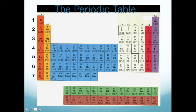In group 17 or 7A are the halogens — unlike noble gases, these non-metals are very reactive and tend to be brightly colored. There are other group names too, like chalcogens for oxygen and sulfur, but you really don't need to know those. The group names are useful for referring to a set of elements collectively — if you're talking about a group 1 metal, you can just call it an alkali metal.